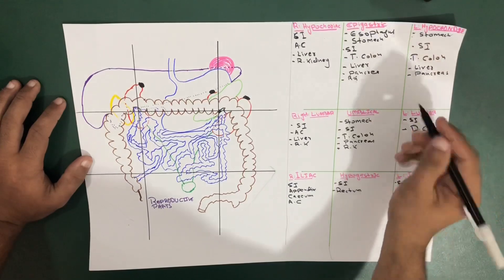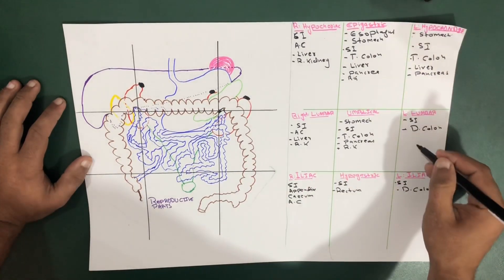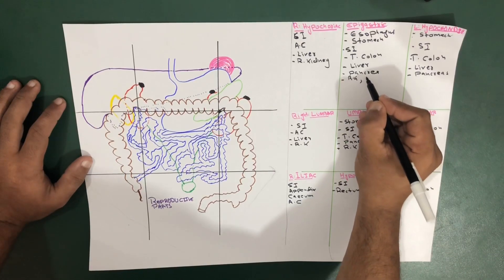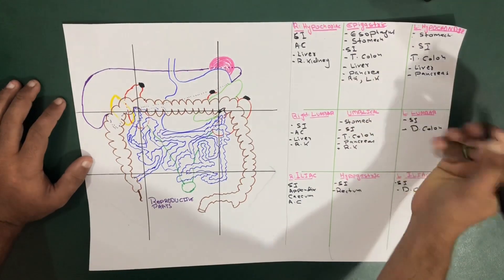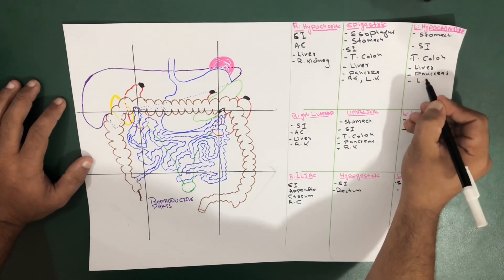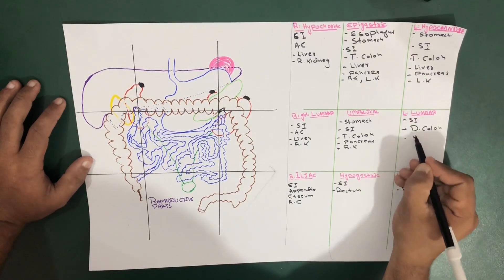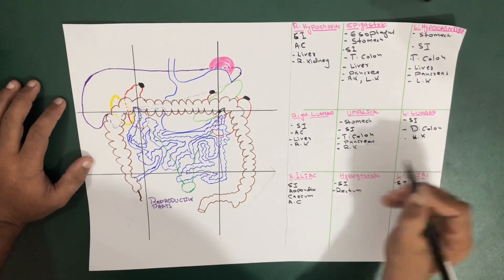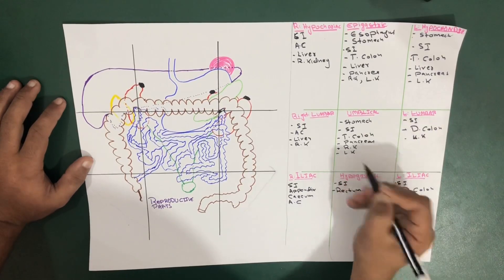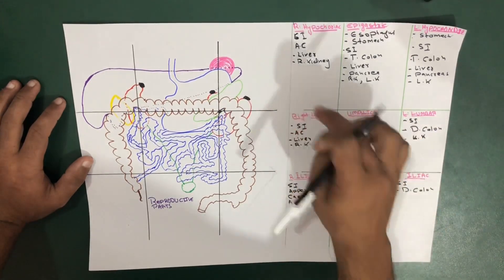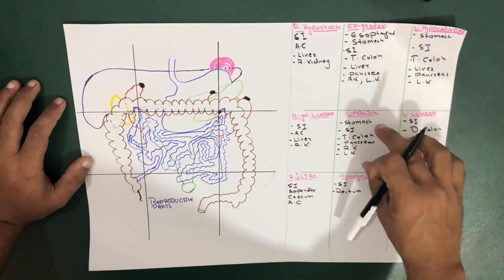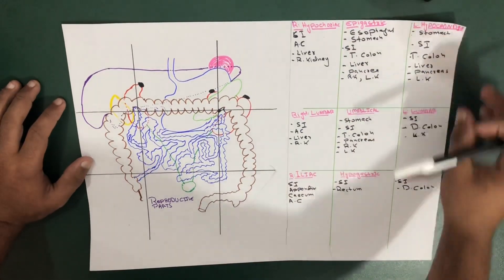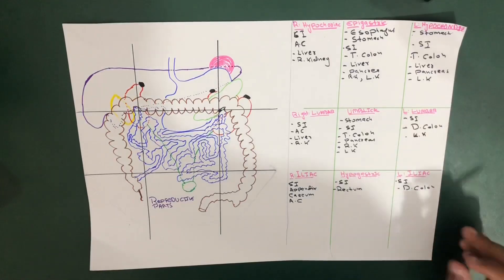Similarly, the left kidney occupies the same four spaces but on the left side: the left hypochondriac region, left lumbar region, the epigastric region, and the umbilical region. In the epigastric and umbilical regions we have both right and left kidneys.